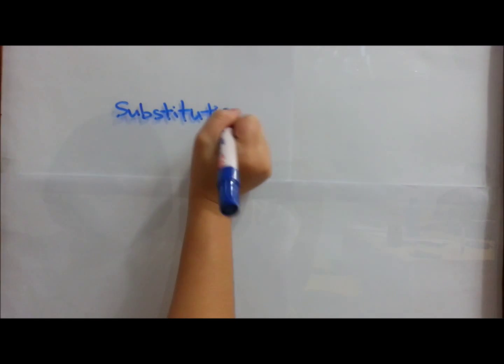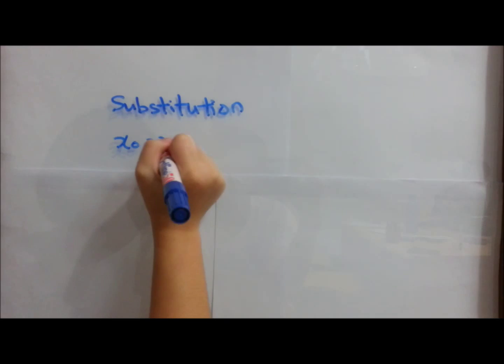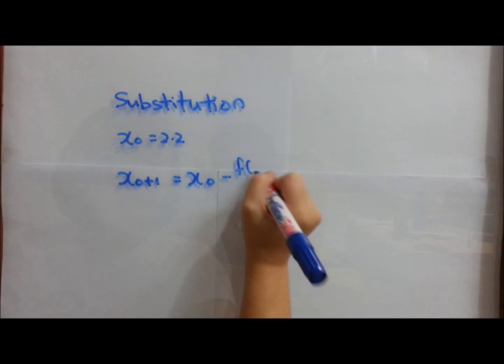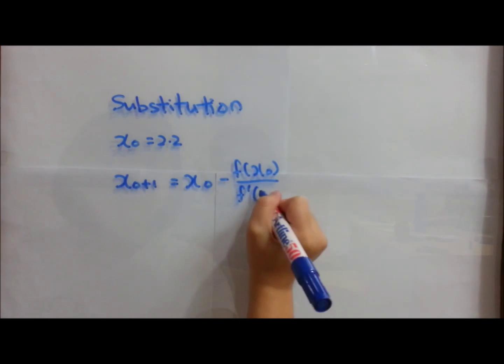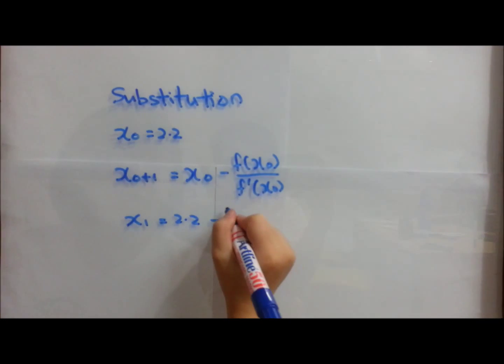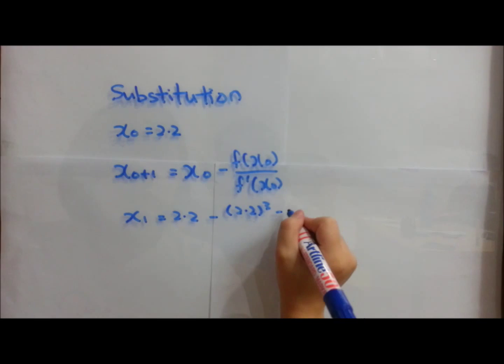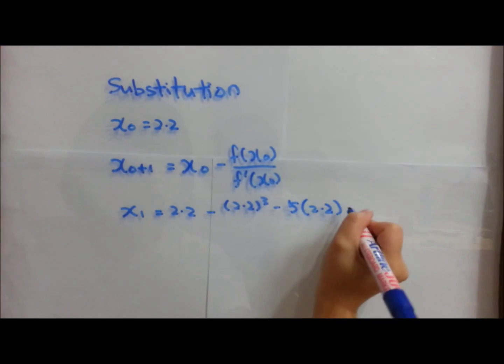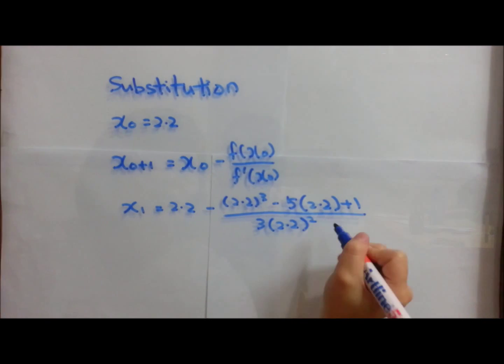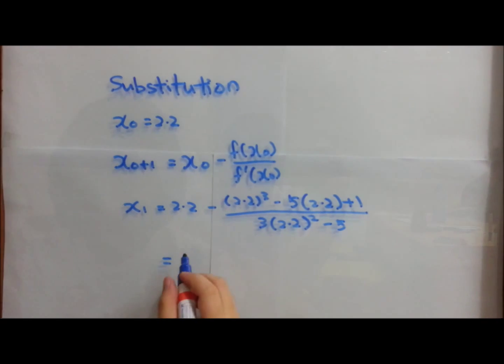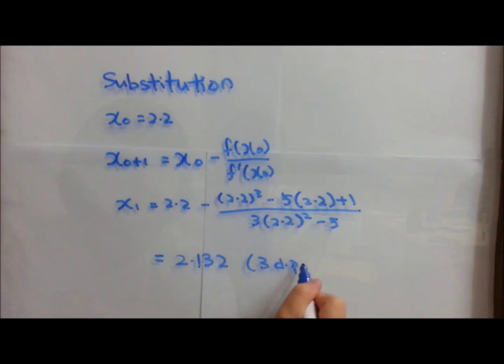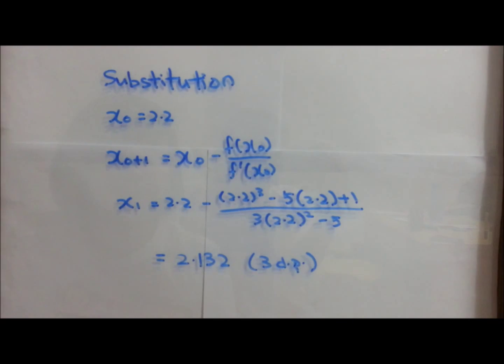you substitute x₀, which is 2.2, into the formula, which you will get x₁ equal to x₀ minus f(x₀) over f'(x₀). So you will get 2.2 minus bracket 2.2 cubed minus 5 bracket 2.2 plus 1 over 3 bracket 2.2 squared minus 5. And your x₁ will equal to 2.132. Remember to change your answer to 3 decimal points.